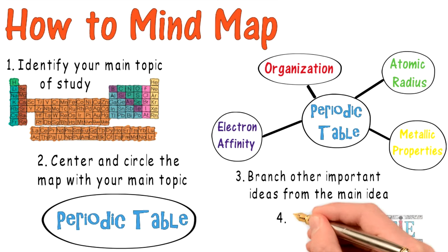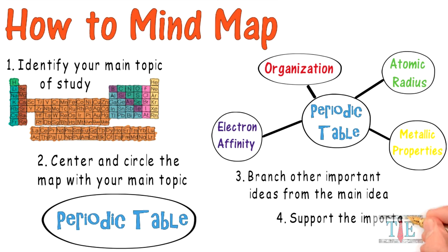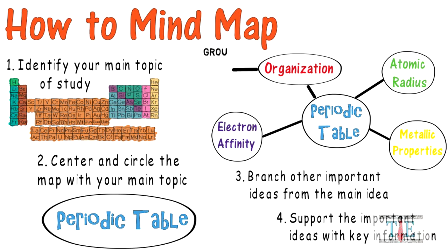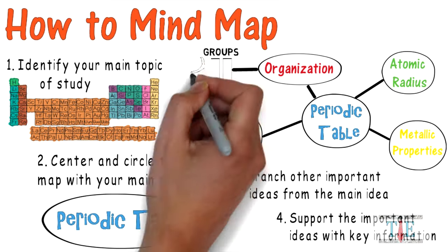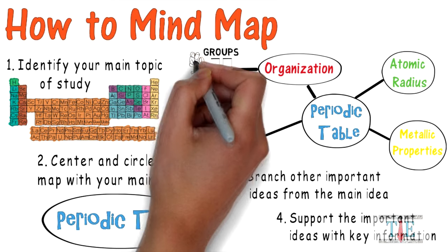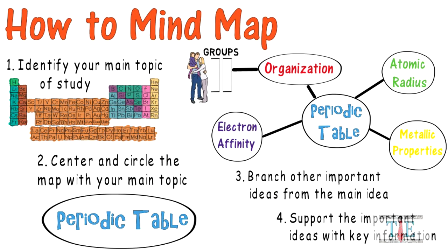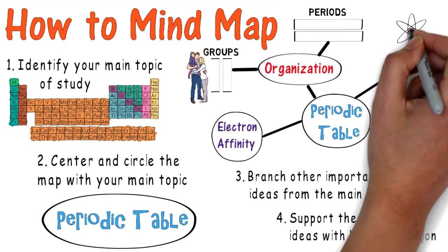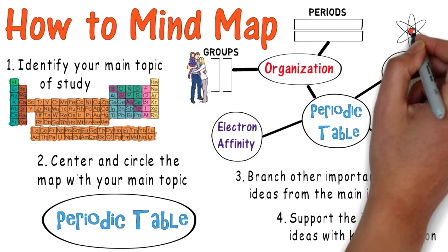Lastly, you want to support the important ideas with the most important information. For example, the organization of the table can be broken down into groups or families, which are columns going up and down, and you can even add a drawing of a family to help you remember. The table is also broken down into periods, which are horizontal rows. Draw them as visuals. Spice up your map by adding even more drawings whenever possible.